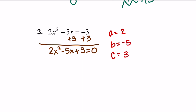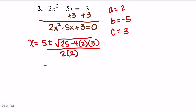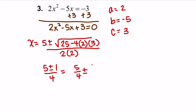a, b, and c are 2, negative 5, and 3. x equals negative b — since b is negative 5, it changes to positive 5. Negative negative 5 is 5, plus or minus the square root. b squared: negative 5 times negative 5 is positive 25 — this number will always be positive. Minus 4 times a (2) times c (3), all over 2 times a (2). Simplifying: 4 times 3 is 12, times 2 is 24. 25 minus 24 is 1, so we have the square root of 1, which is just 1, all over 4. This equals 5/4 plus or minus 1/4.